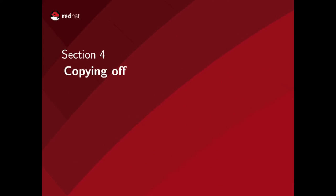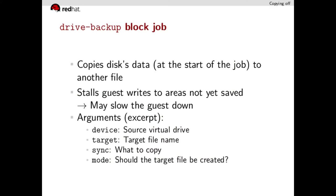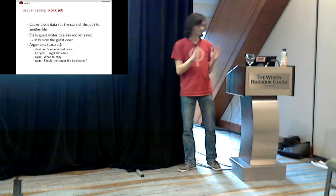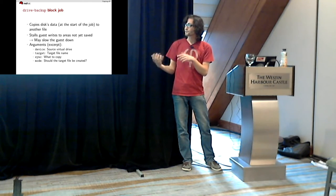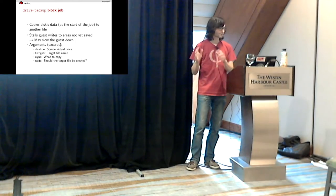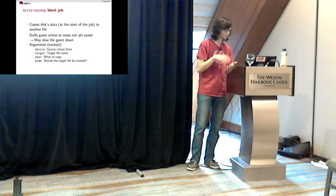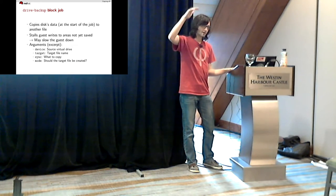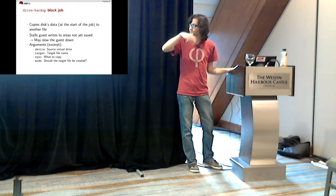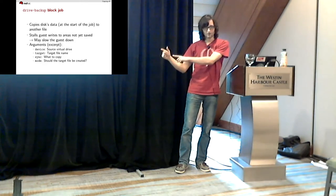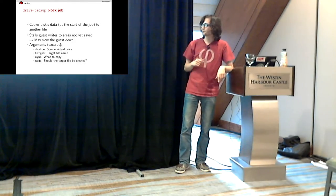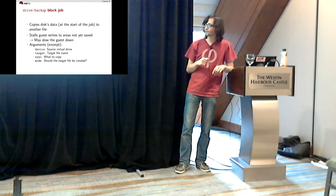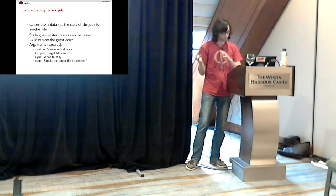Now we can see what block jobs help us do a backup. The main one is called `drive-backup`, which copies a guest disk's data to another file. The state in the backup file reflects the state of the guest disk at the start of the block job, so you always get a consistent state. However, whenever the guest writes to an area that hasn't yet been copied to the backup file, QEMU must first copy that area off before letting the guest continue. So if you have heavy I/O in the guest during a backup, the guest may be slowed down quite a bit.